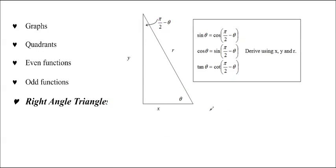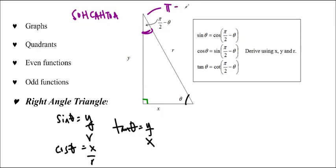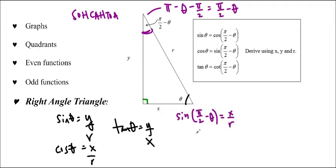The last way is using right-angle triangles. If we call this angle theta, then sine theta equals y over r, cos theta equals x over r, and tan theta equals y over x. Using SOH CAH TOA, the other angle is pi over 2 minus theta, because the whole triangle is 180 degrees minus theta minus 90 degrees, giving pi over 2 minus theta. So sine of pi over 2 minus theta — the opposite is x and hypotenuse is r — equals x over r, which is cos theta.